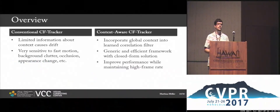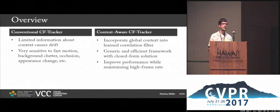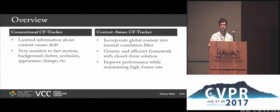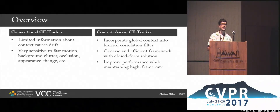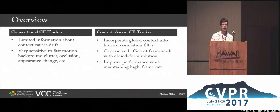Now a comparison of conventional CF tracking versus what we propose. In conventional CF tracking, the problems are that there's often a drift because there's very limited context information — only a very local region which is densely sampled. If the object moves further, it can easily get lost. It is very sensitive to fast motion, background clutter, and so forth. In our formulation, we incorporate context into the filter and propose a generic framework that can be added to pretty much any CF tracker, affecting computational performance only very minimally, so we can still achieve a very high frame rate.